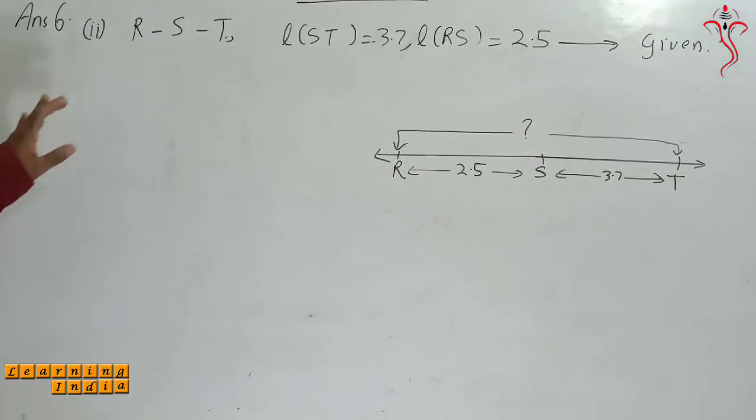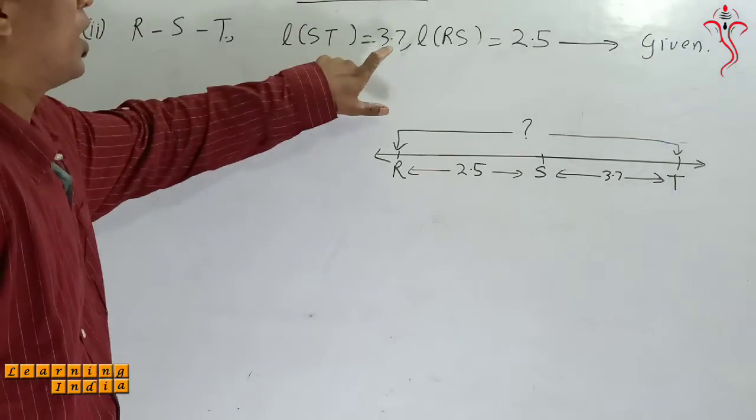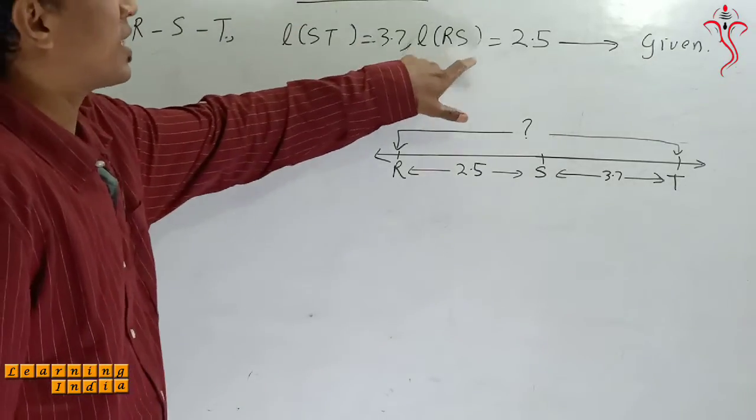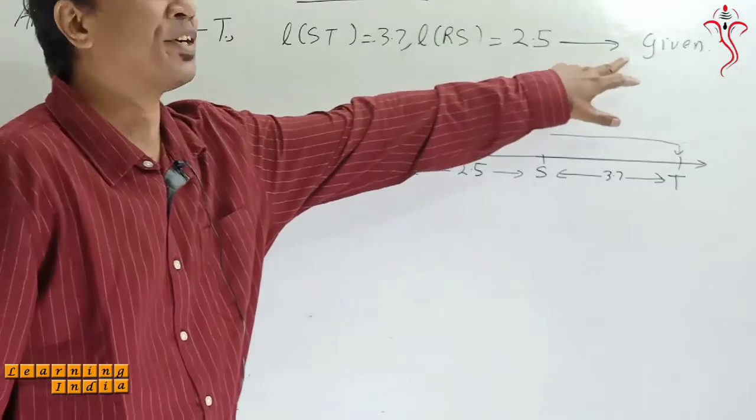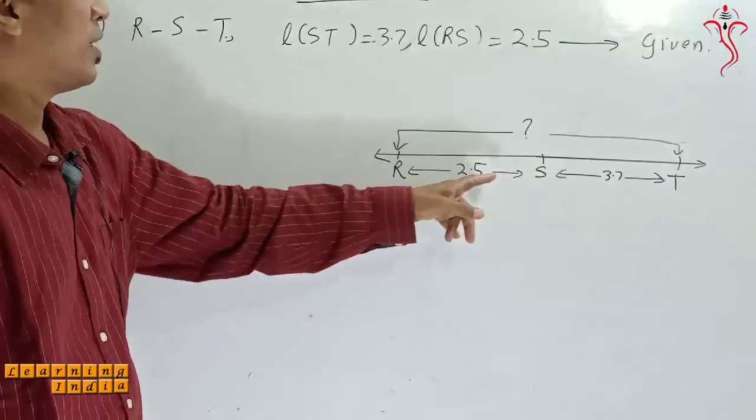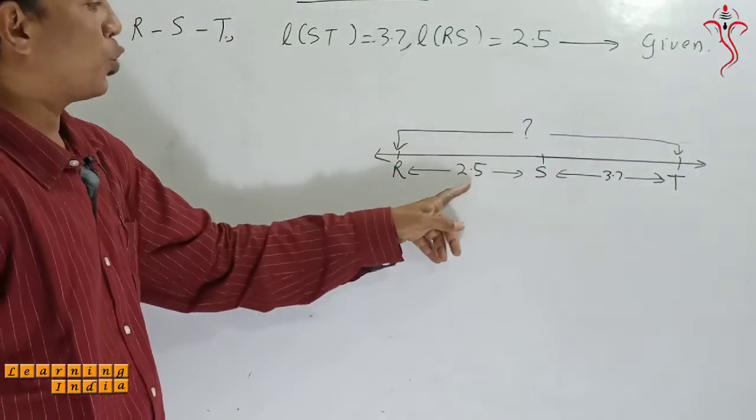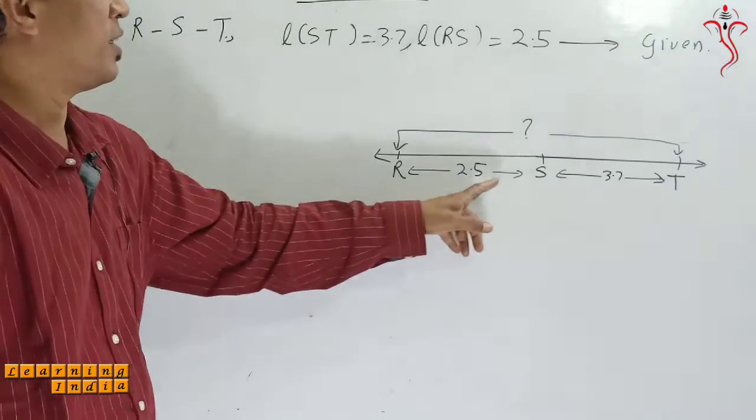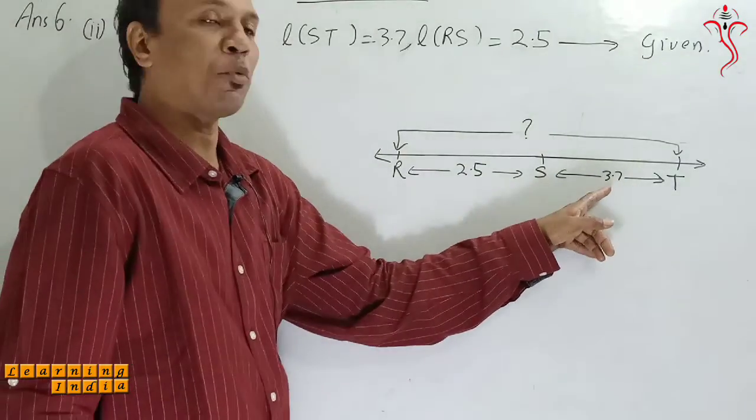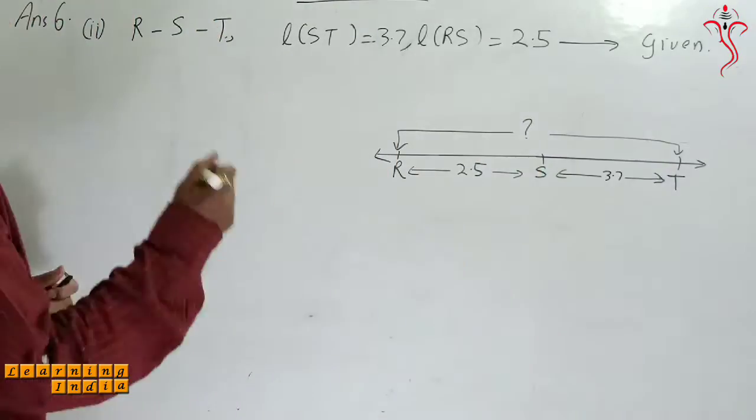Now question number 2. They have given you as R-S-T. ST ka length is 3.7, RS is 2.5. This is given. In the diagram, R-S-T, RS ka value 2.5. ST ka value 3.7. RT we have to find.